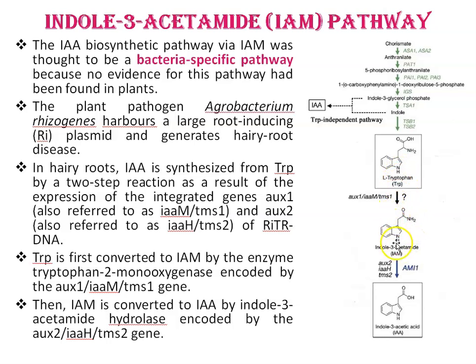In this pathway, tryptophan is first converted to IAM (indole-3-acetamide) by the enzyme tryptophan-2-monooxygenase, encoded by AUX1 genes. Then IAM is converted to IAA by indole-3-acetamide hydrolase, which is encoded by AUX2 (also known as IAAH or TMS2).